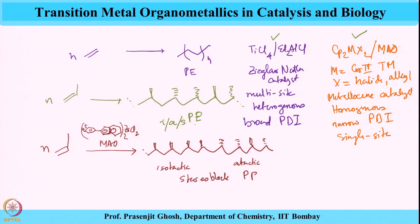This is a fine demonstration of the scope and capability of organometallic chemistry that can be put to use — a fantastic demonstration that champions the field of organometallic chemistry for utility in achieving very different, difficult, or challenging reactions. Today, having covered all of these, we are going to take a look at two more types of polymerization.